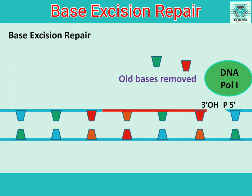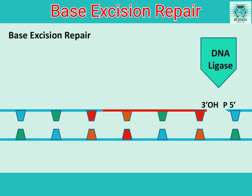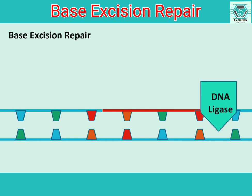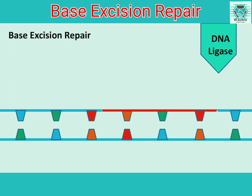Here in the diagram you can see how it happens. Once the activities of DNA polymerase are over, we see the activity of ligase. DNA ligase then seals the place by formation of a phosphodiester bond.